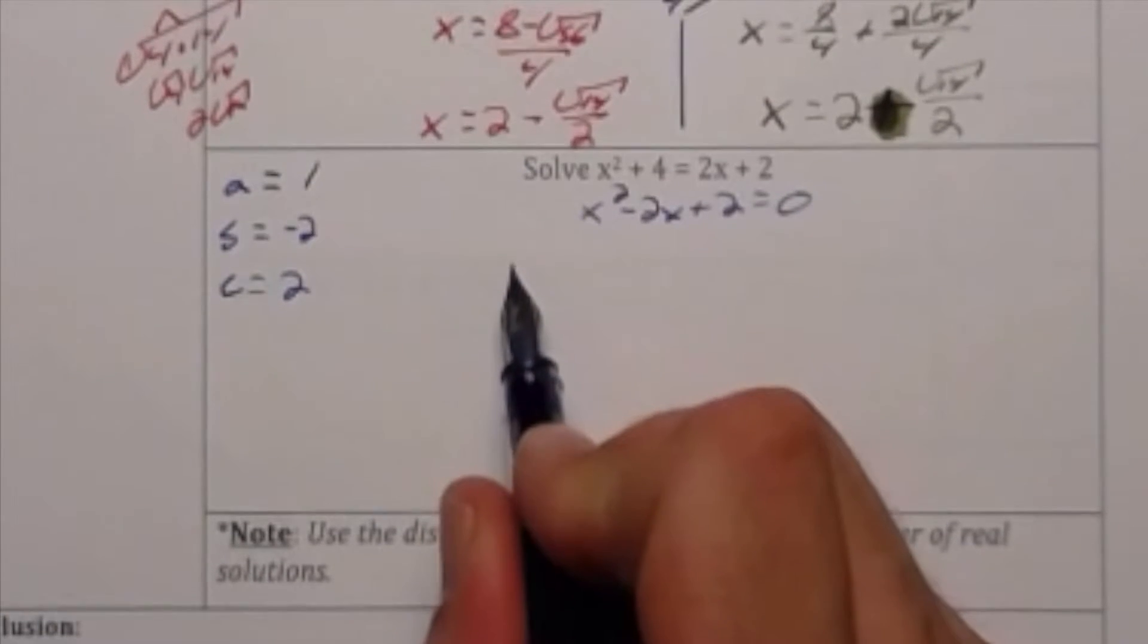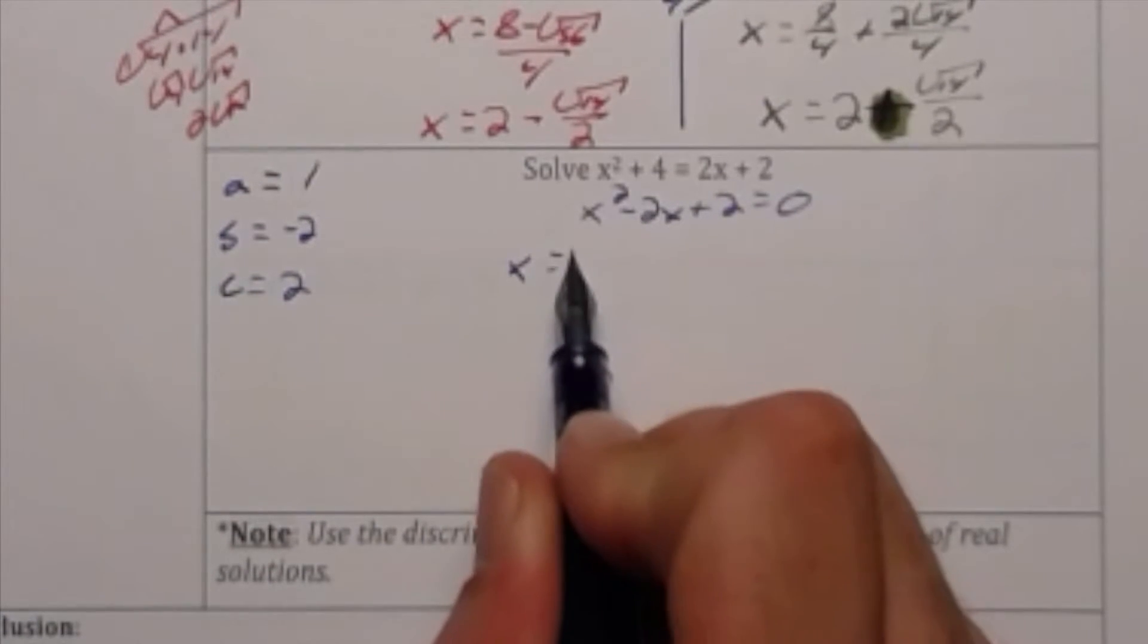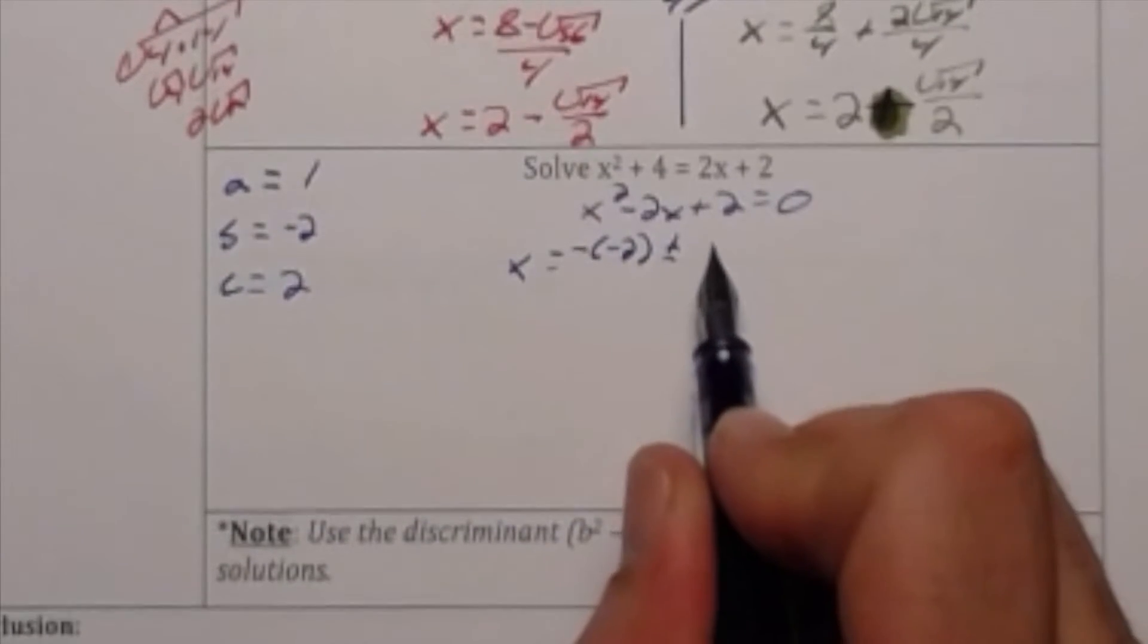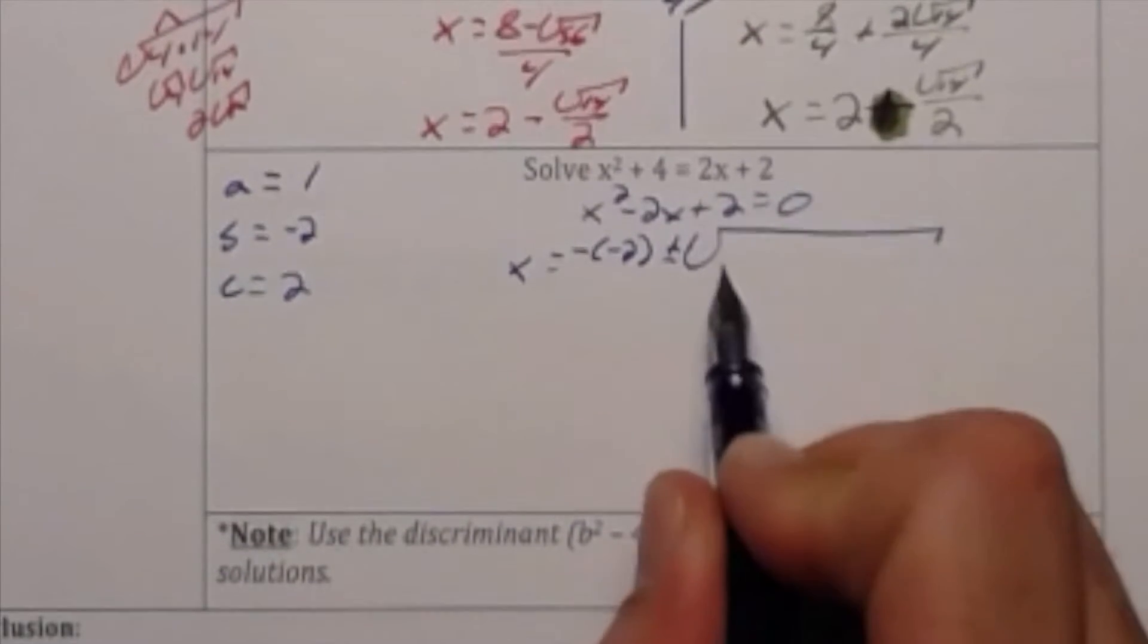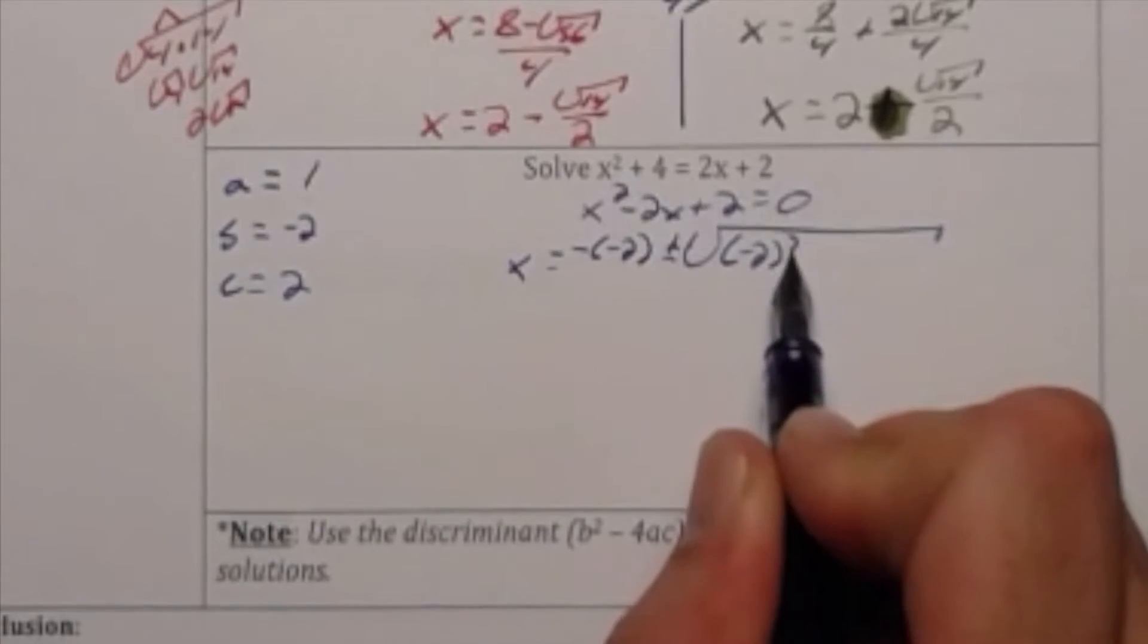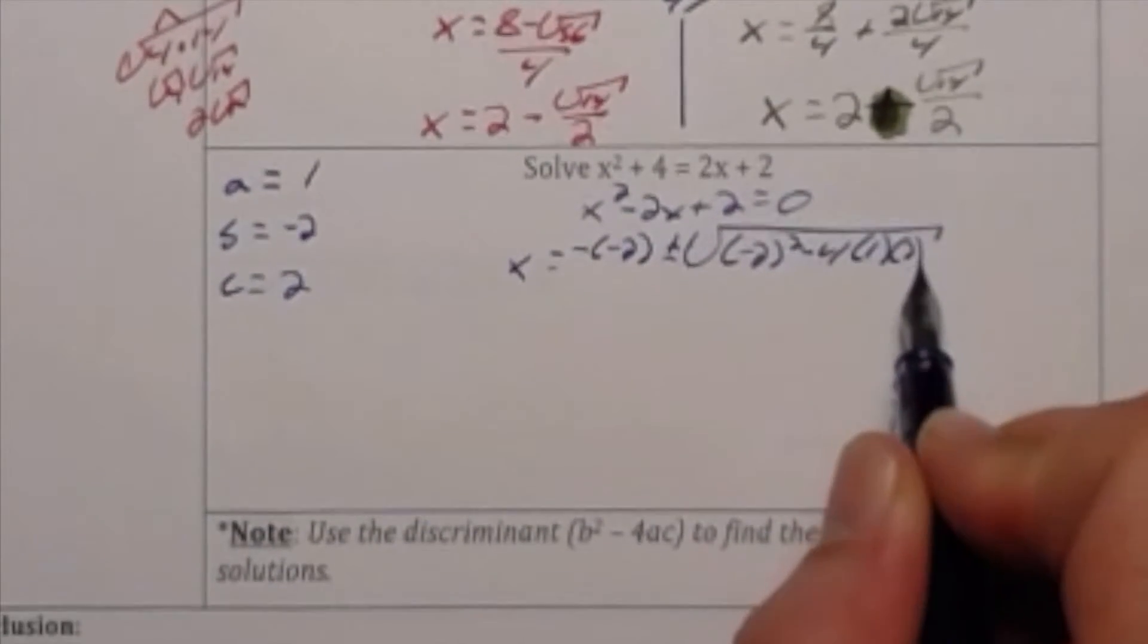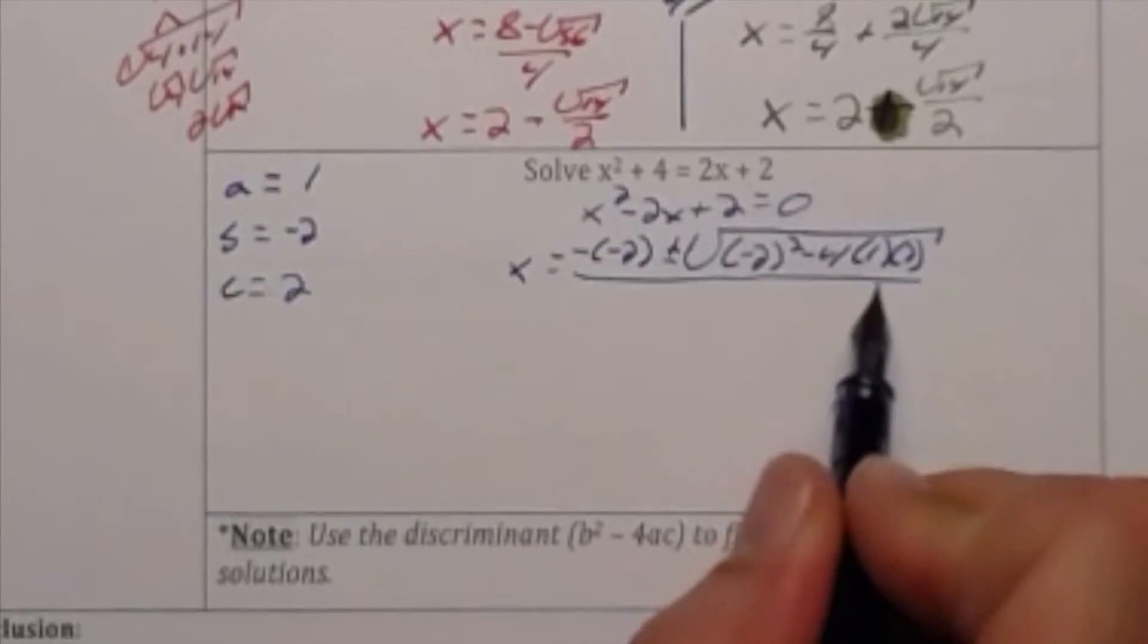This is going to let me go ahead and substitute those values into my original equation to get x is negative times negative 2 plus or minus negative 2 squared minus 4 times 1 times 2 all divided by 2 times 1.